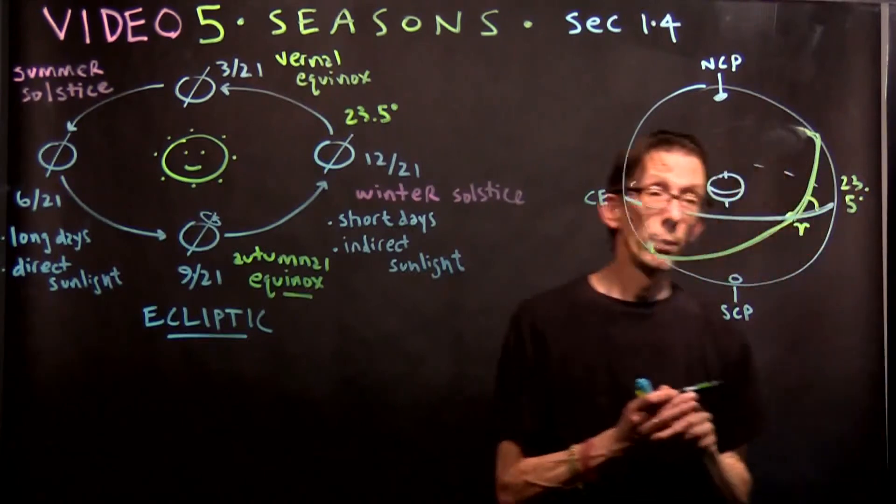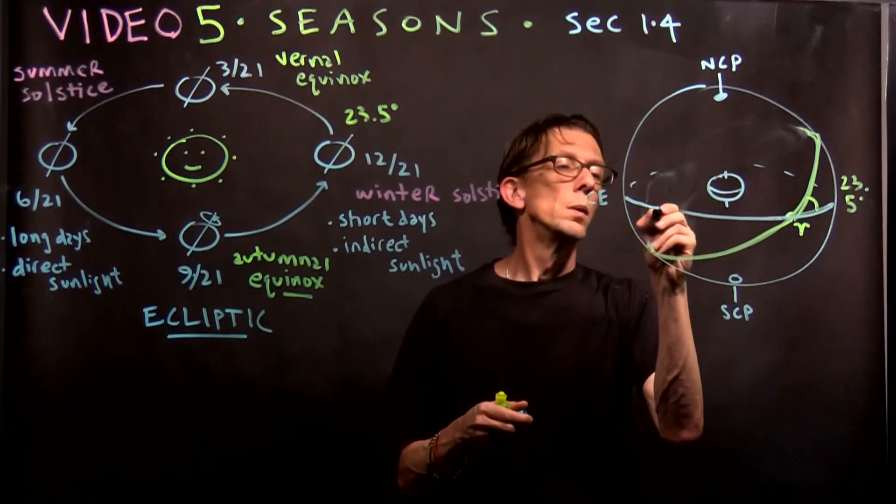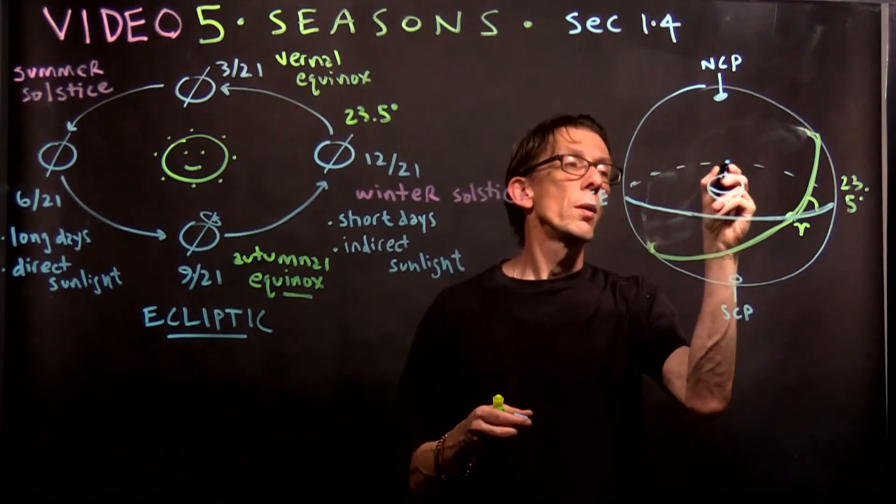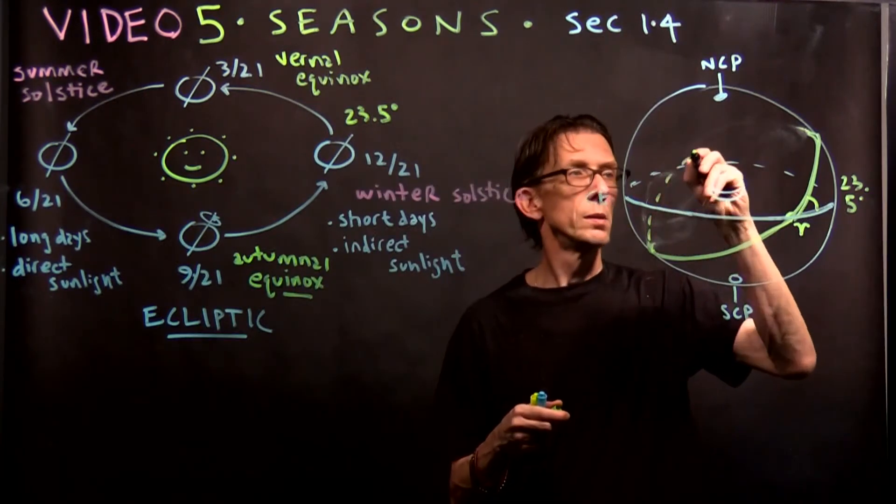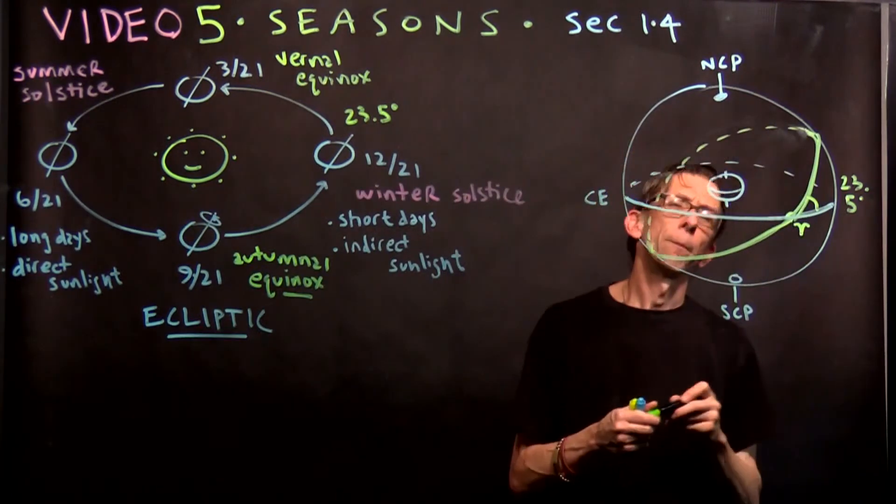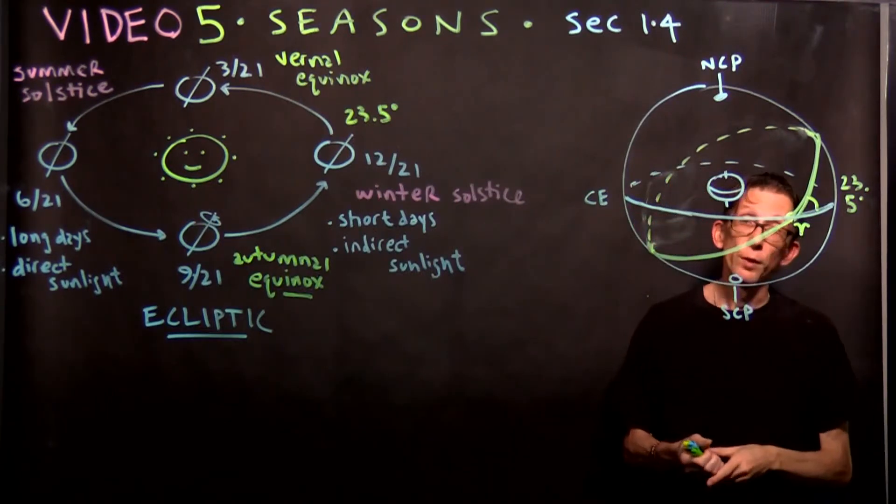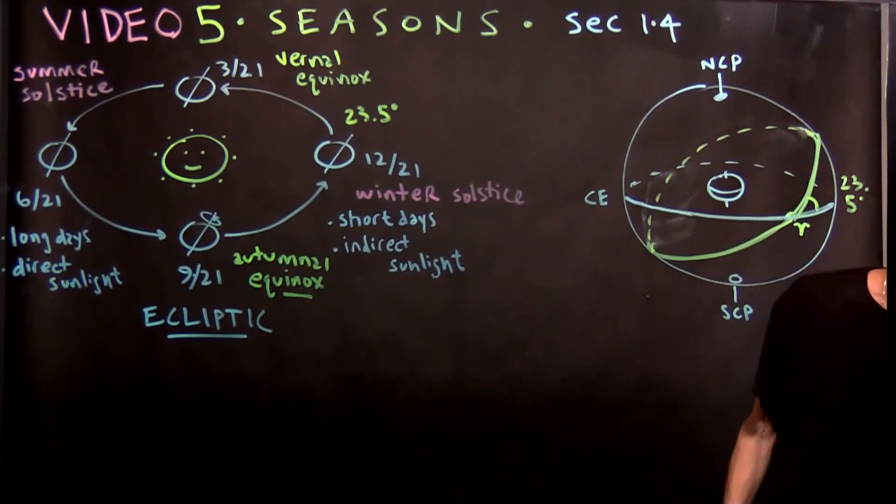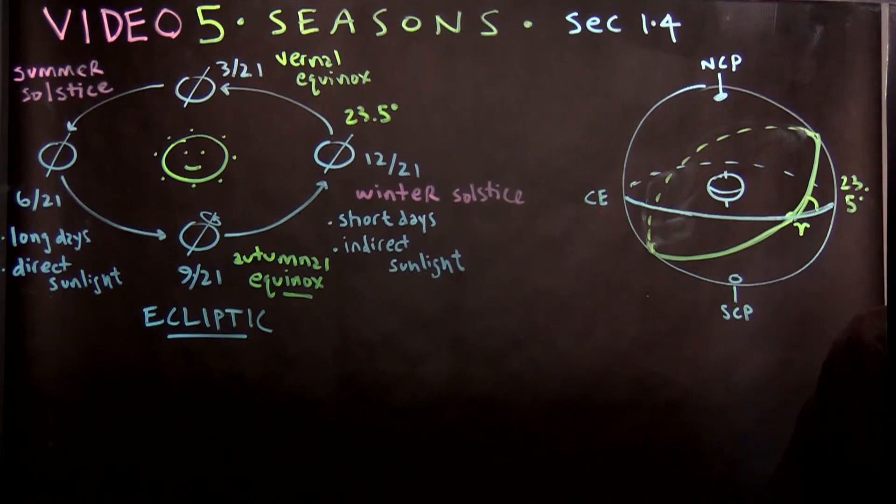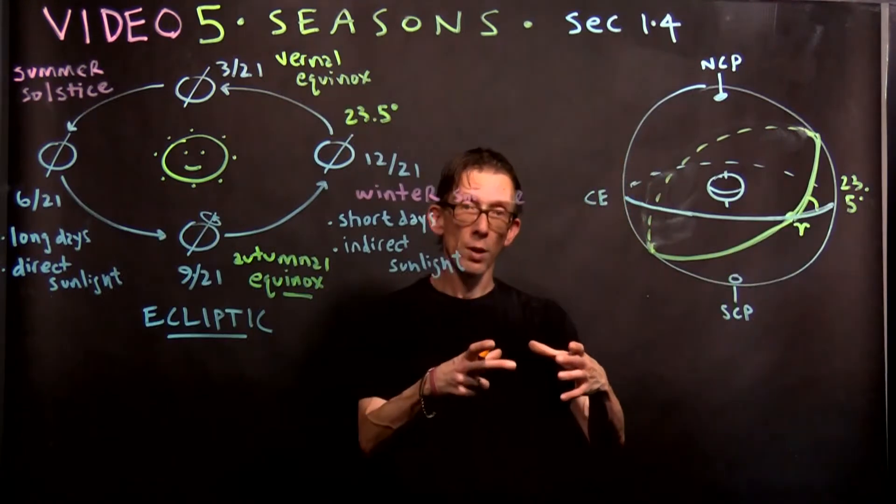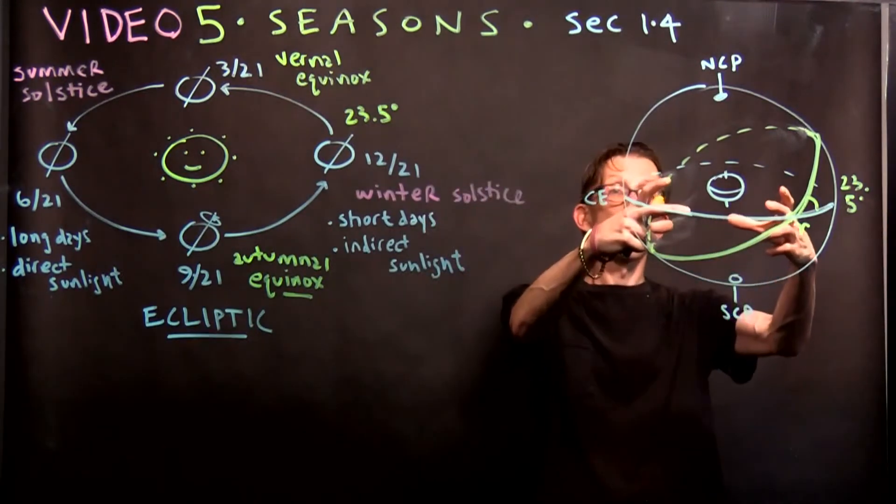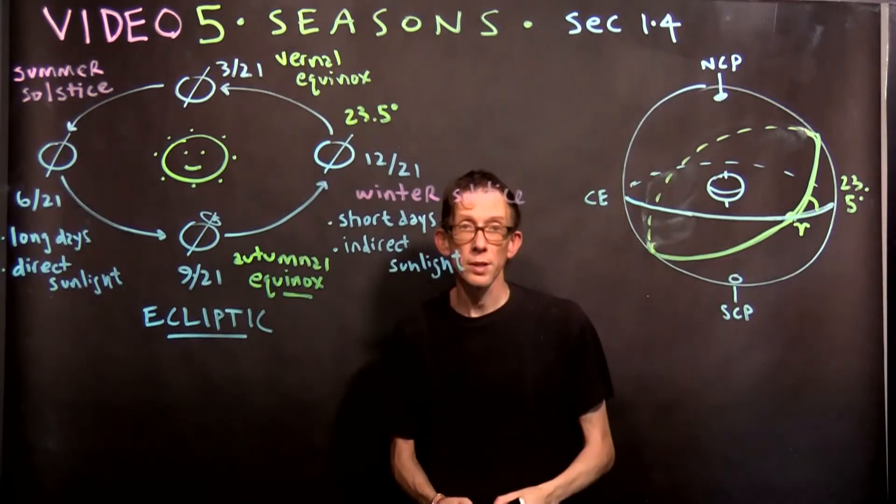So the celestial equator wraps around the back. So does this line wrap around the back. It's just tilted relative to the celestial equator. And that tilt is 23.5 degrees. So we have two circles. So we have one circle, the celestial equator, and another circle tilted relative to it, 23.5 degrees.